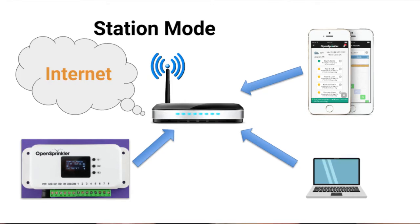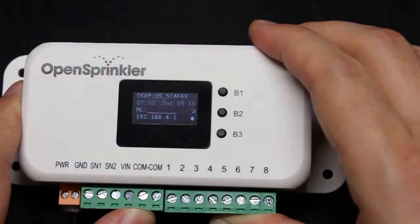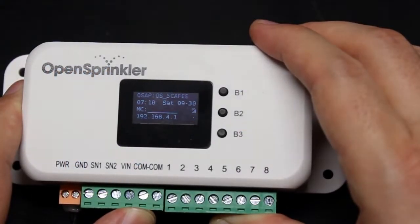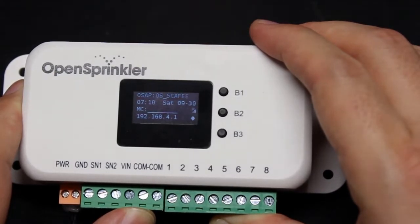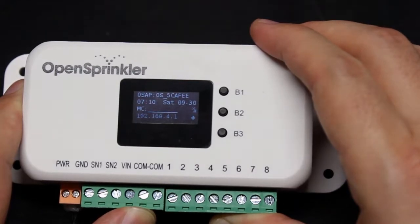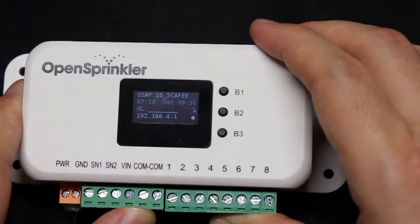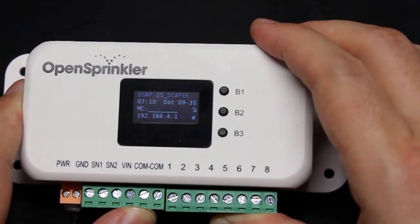In station mode, your OpenSprinkler as well as other devices on your network communicate with each other through your home Wi-Fi router. So in short, the AP mode is mainly used to complete the Wi-Fi configuration. However, as I will explain later, the controller can still function fully in AP mode. In that case, you can use it without another router, which is suitable in cases where you don't have internet connection.